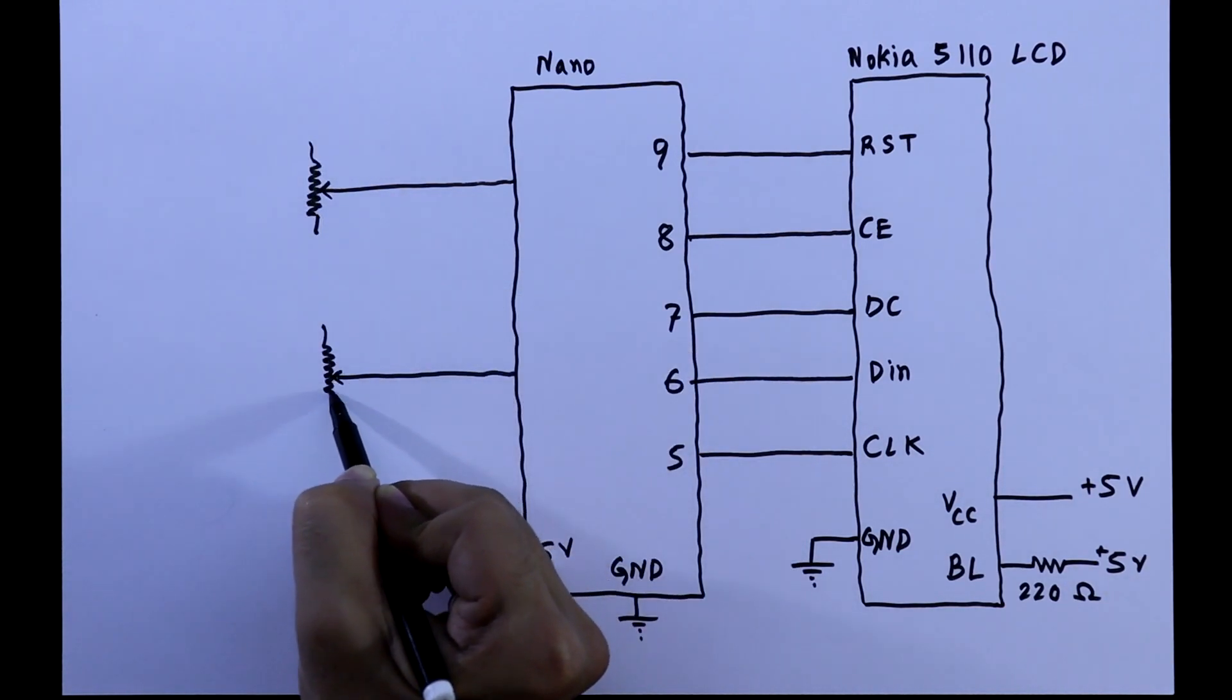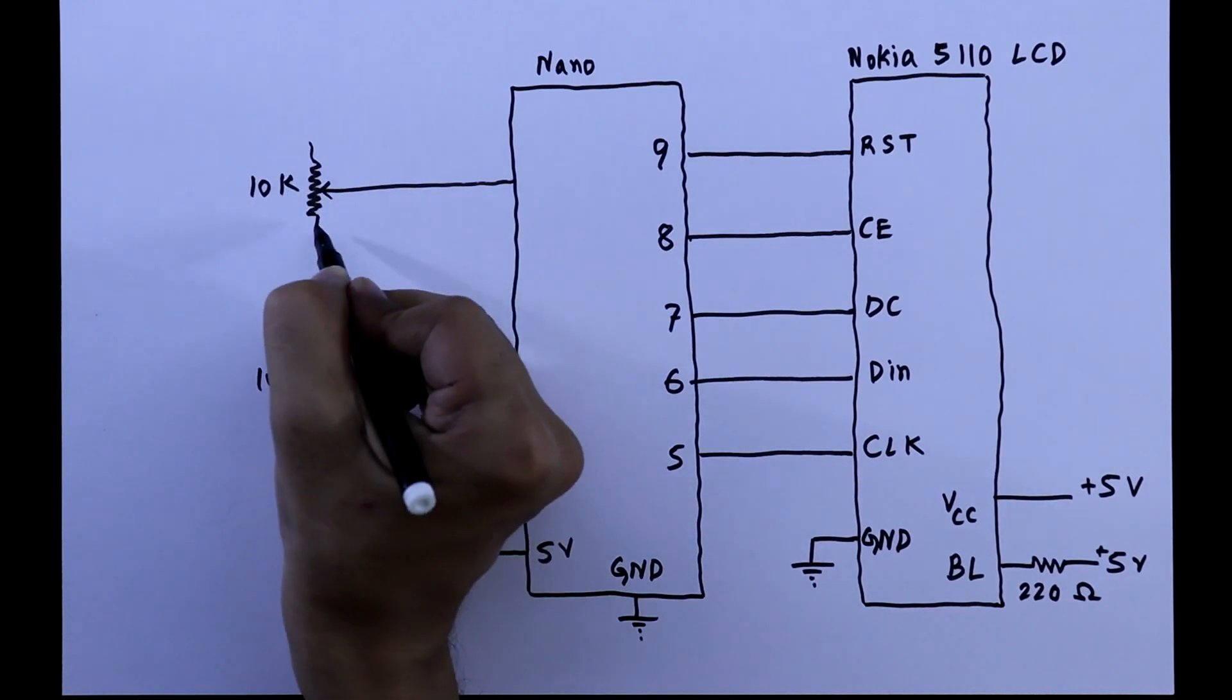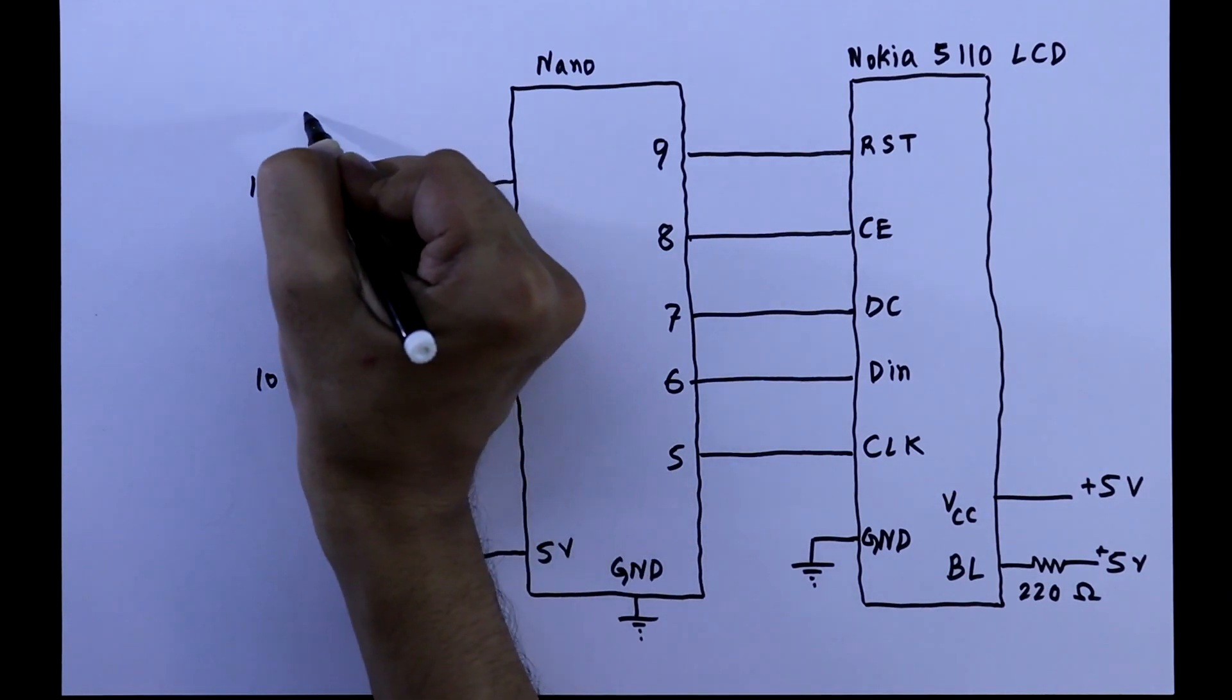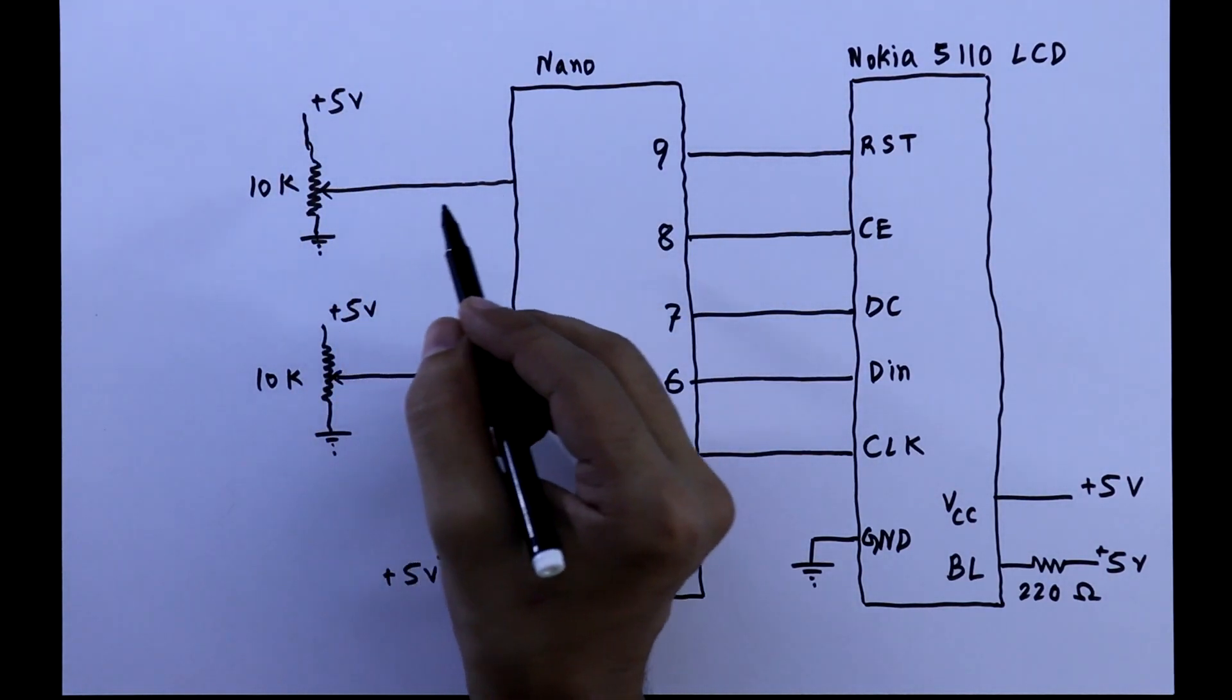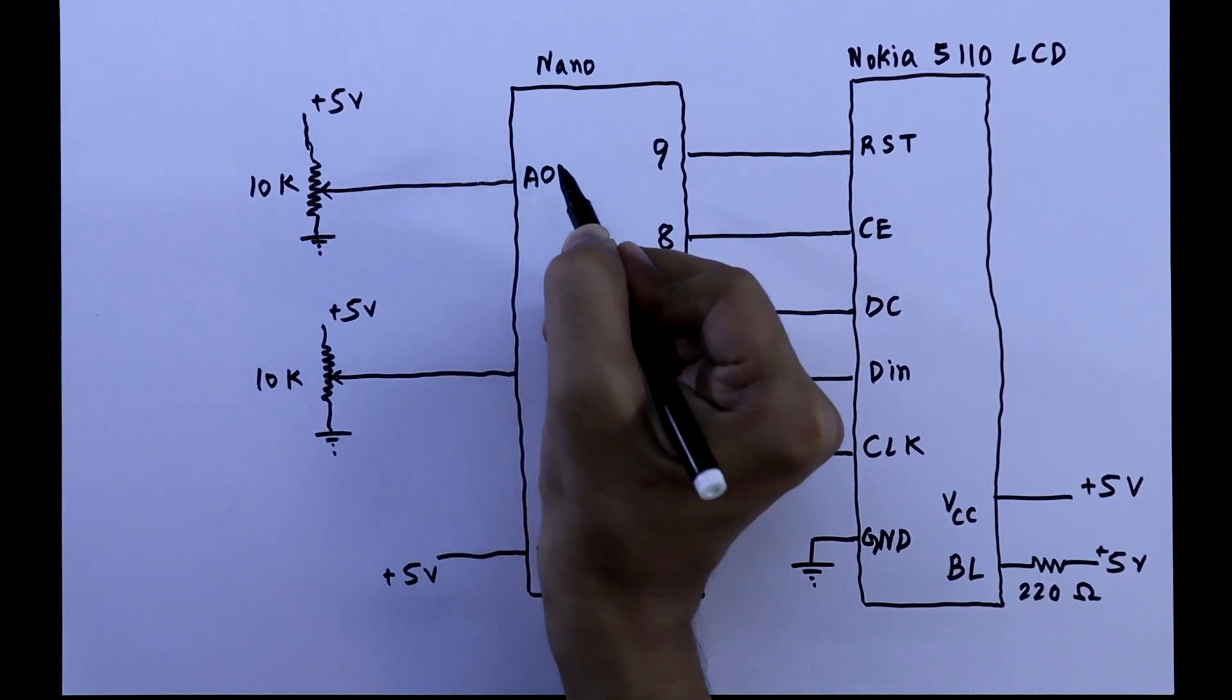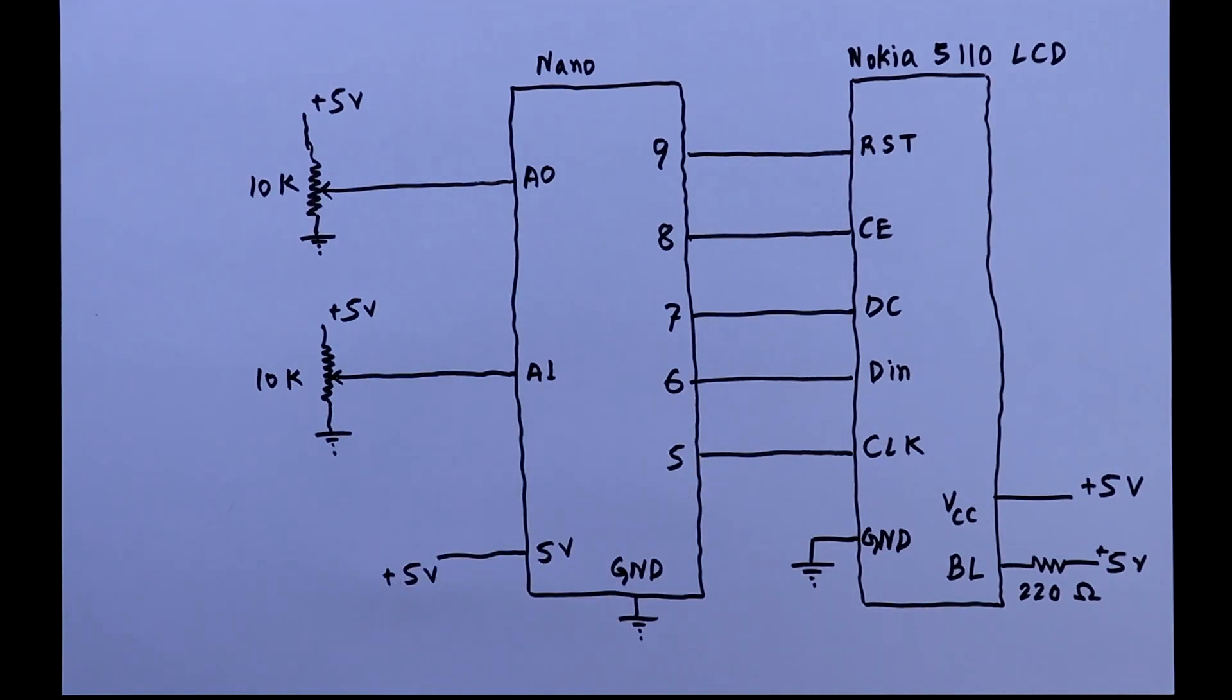The value of the potentiometers is 10 kilo-ohms. One pin of the potentiometer is connected to the ground and another one to the plus 5 volts. The middle pin of the potentiometer is connected to the analog pin of Arduino. It is to A0 and A1. So this is the connection, now we'll see this in practical.